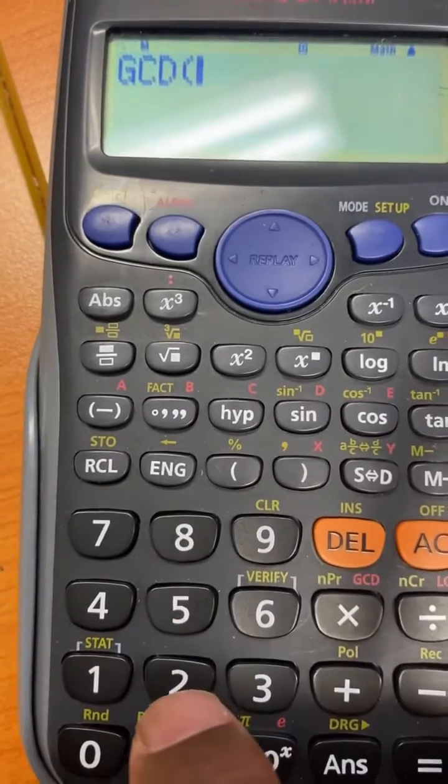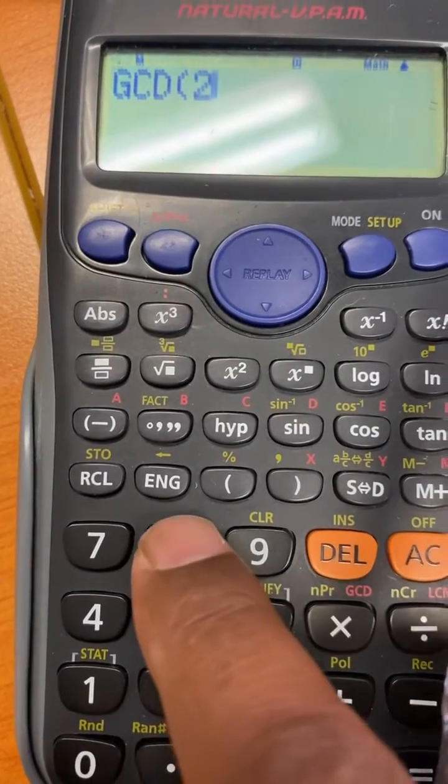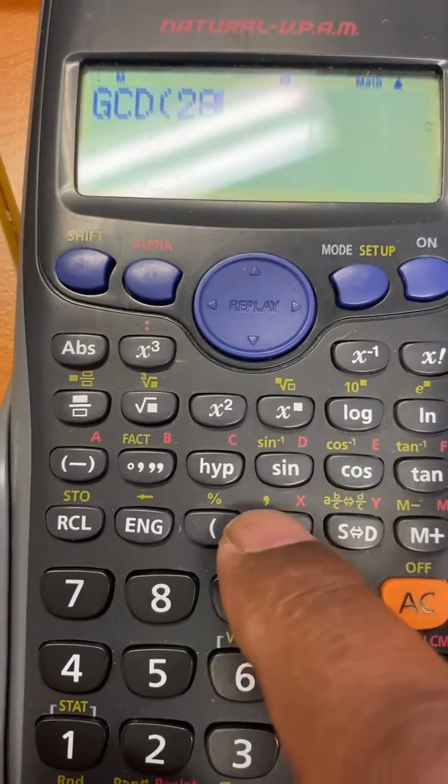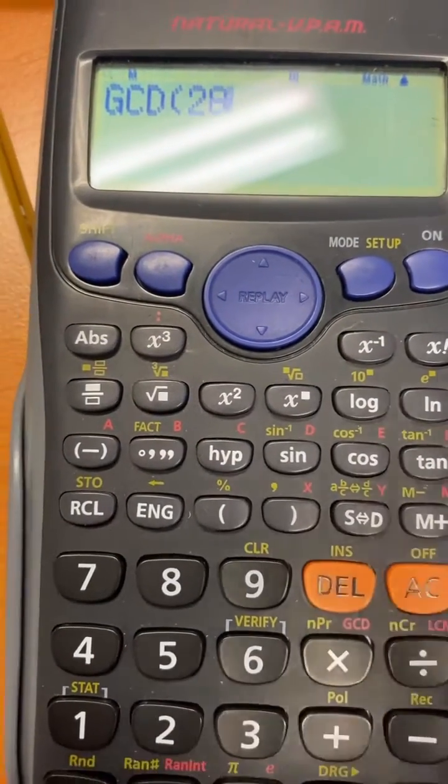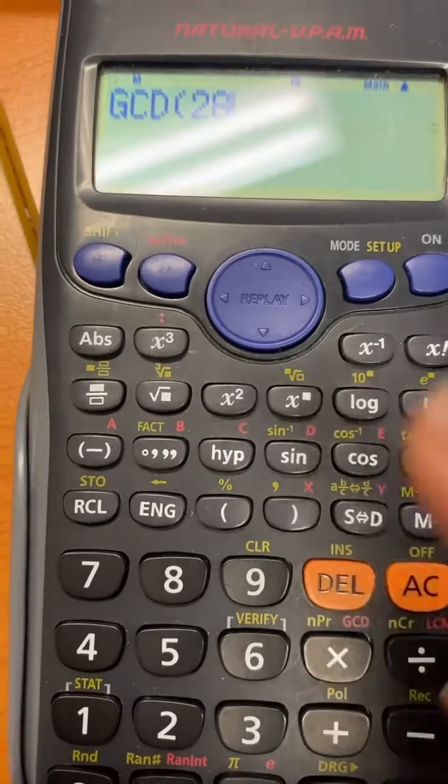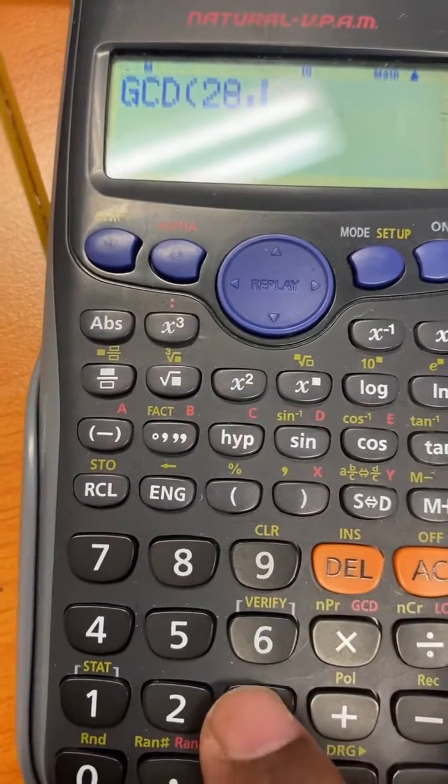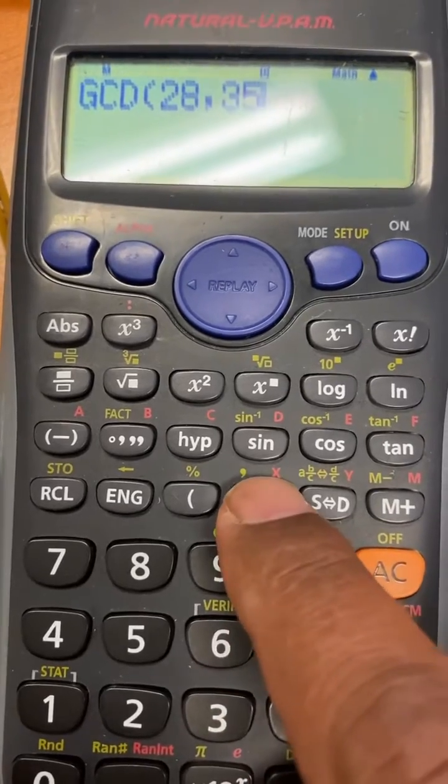Now you want to find the number that divides 28, and there is no comma here so you can access the comma button. There is a comma here. So press the shift key and put comma here and then 35 is the next number and then close the bracket here.